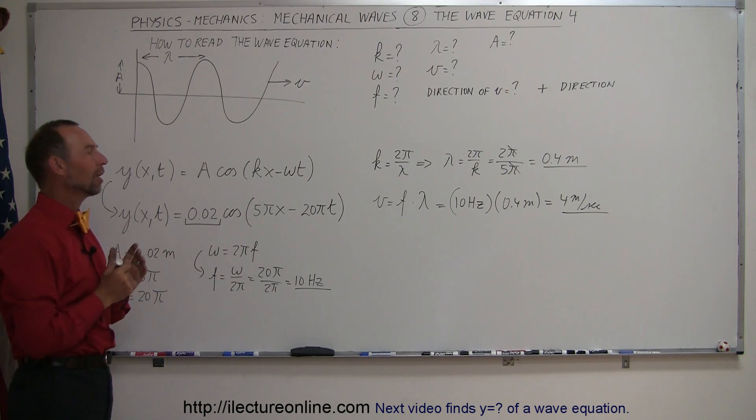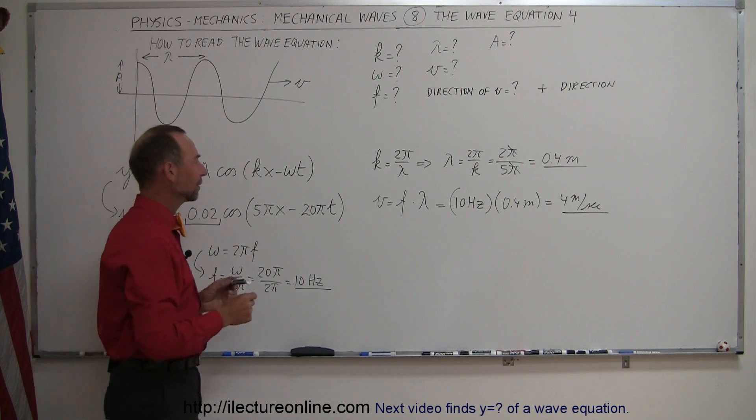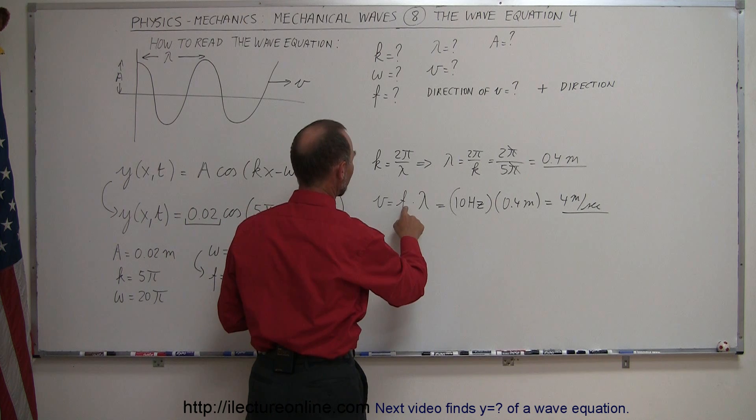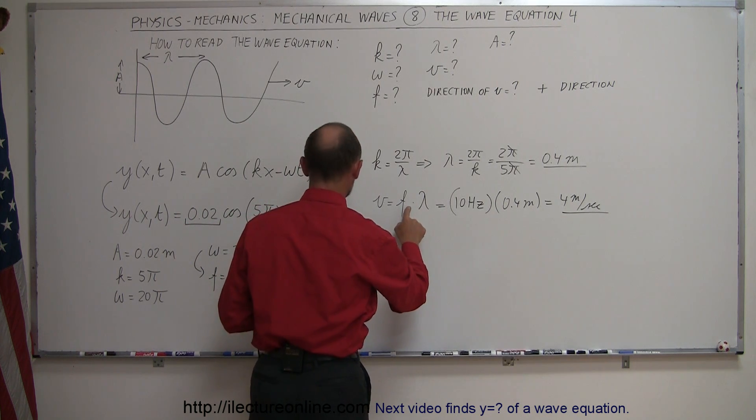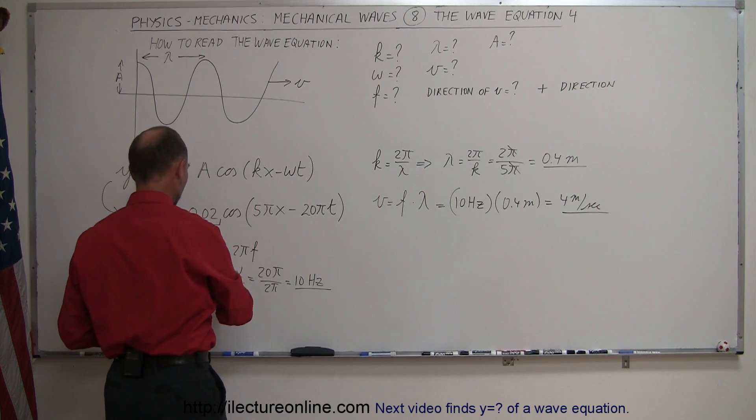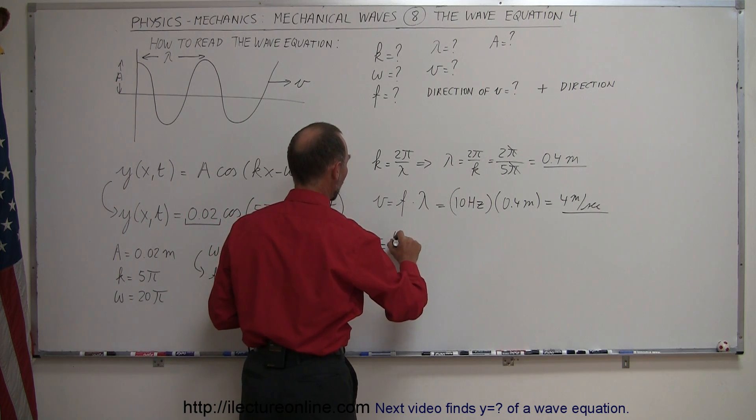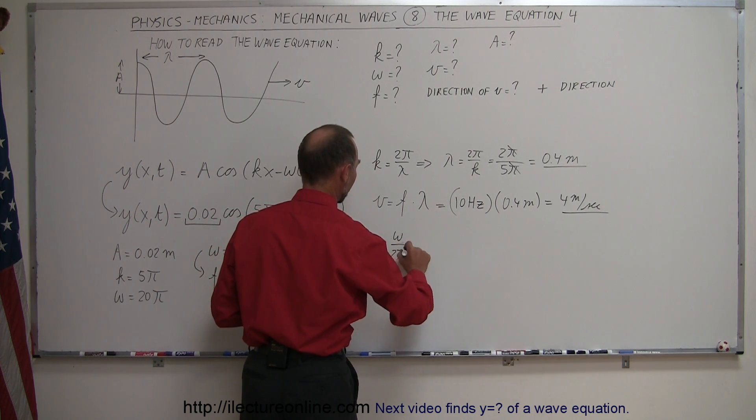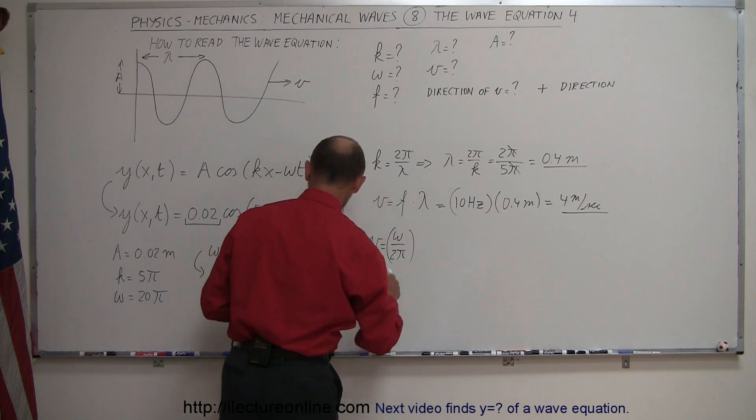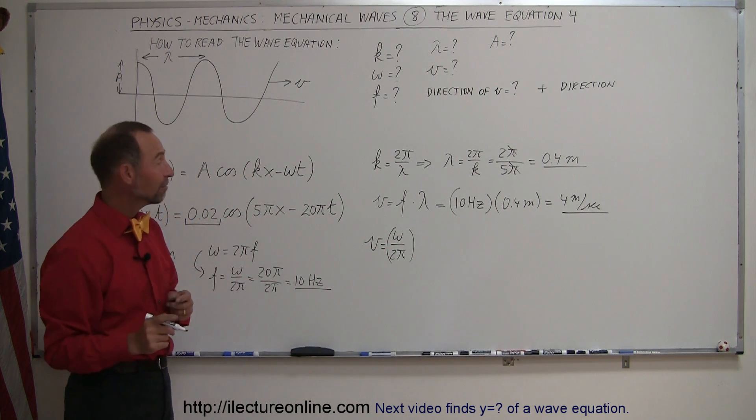Now there's another way of looking at velocity. Notice that velocity is frequency times wavelength, so frequency is omega divided by 2 pi, so we can say that velocity is equal to omega divided by 2 pi.